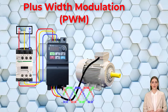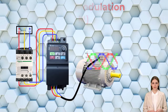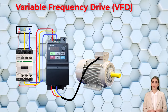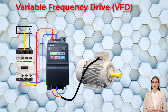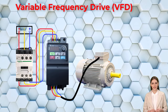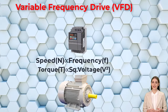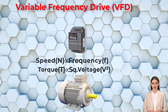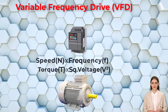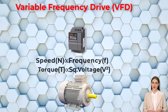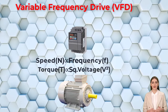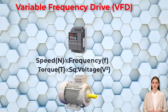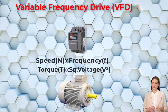This AC power is supplied to the motor, where it interacts with the motor's magnetic fields to generate torque and rotation. The frequency of the AC power determines the motor's speed, and the voltage determines the torque. The speed of an induction motor is directly proportional to the supply frequency, and the torque is directly proportional to the square of the supply voltage. By varying the frequency and voltage, a VFD can precisely regulate the motor's speed and torque, making VFDs ideal for applications requiring variable speed control.